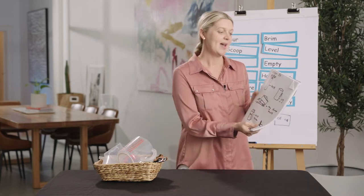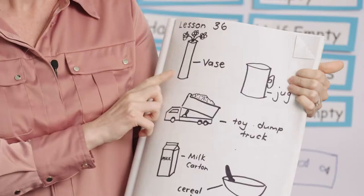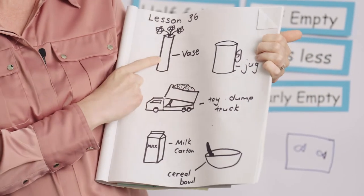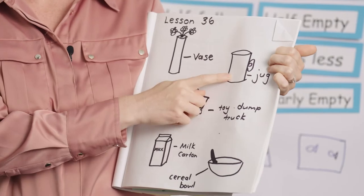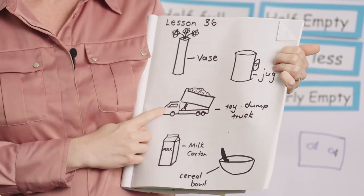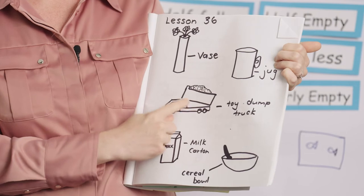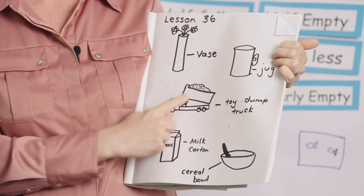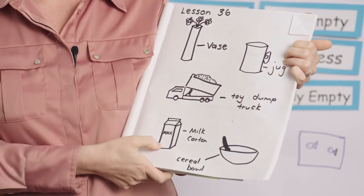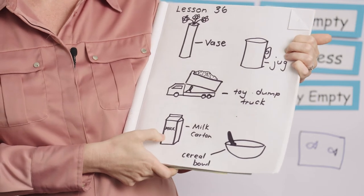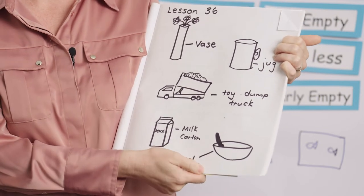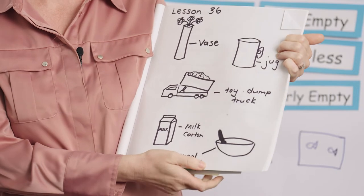At my house, I found a vase that has capacity. I also found and drew a water jug. My son's toy dump truck has a capacity here — it can hold sand or dirt. The milk carton has capacity, and so does our cereal bowl. Well done.